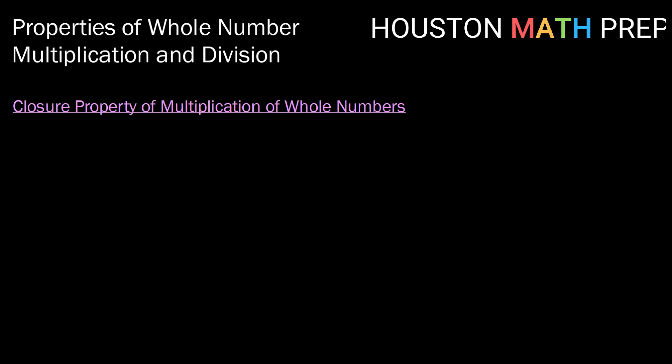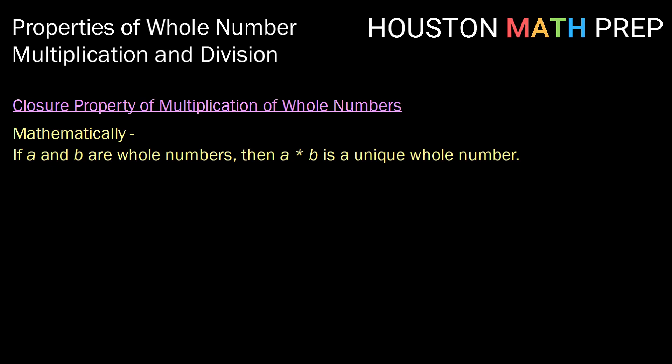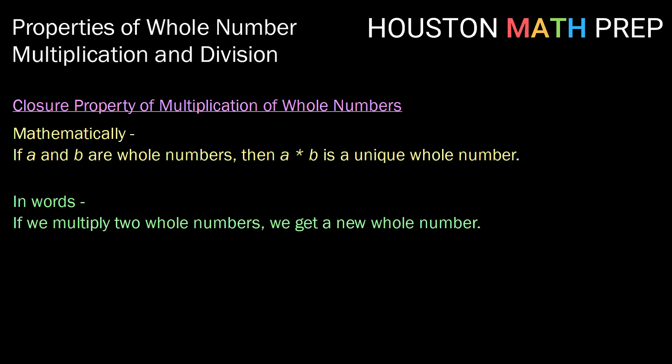Starting with the closure property of multiplication of whole numbers. Mathematically, this property states that if a and b are whole numbers, then a times b is a unique whole number. In words, we can say if we multiply two whole numbers, we get a new whole number. So the multiplication of whole numbers is closed over the operation of multiplication.